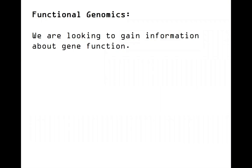So what is functional genomics? In general, functional genomics means we're looking to gain information about gene function. We've been talking about this all semester — comparing phenotype to genotype. Gene discovery through QTL mapping, where we figure out where a gene would be based on recombination frequencies. That direction, going from a phenotype we see to figuring out what the gene is, is called forward genetics.